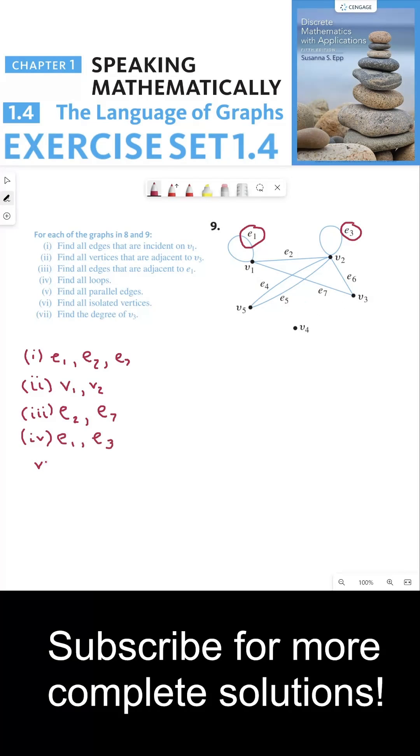For part 5, we need to find all the parallel edges. These are, put another way, multi-edges, or edges that connect vertices that are already connected by another edge. So in this example, that is edge 4 and edge 5.